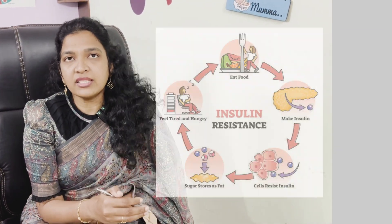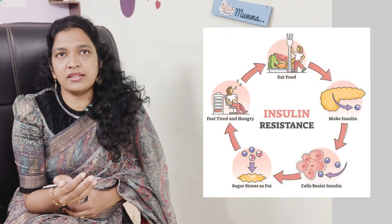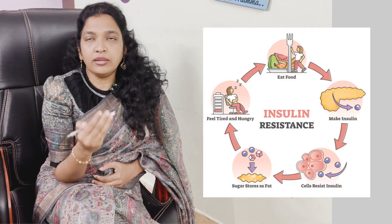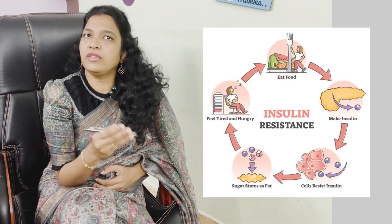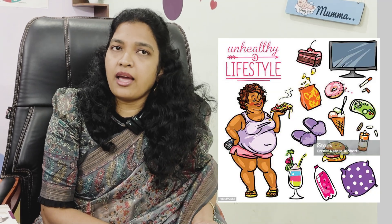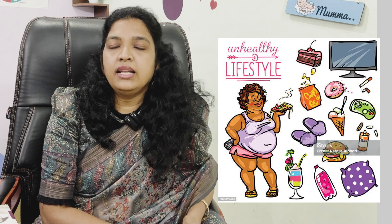There are some causes of PCOD. First, genetics — it can run in the family. Second is insulin resistance; high insulin triggers the ovaries to secrete more androgens. The most common cause is an unhealthy lifestyle — poor diet, lack of exercise. Stress also triggers this condition.